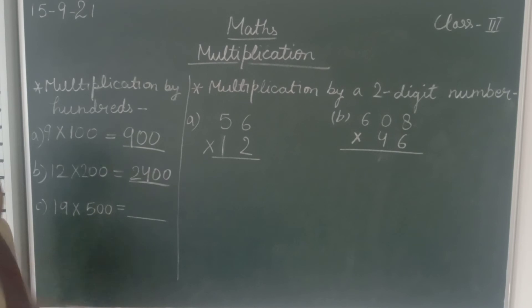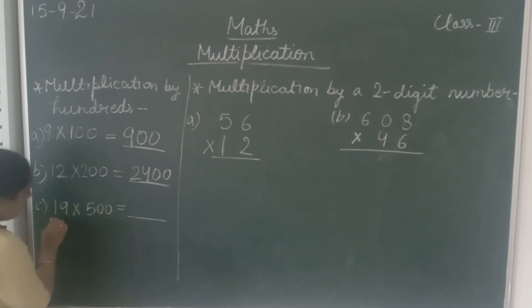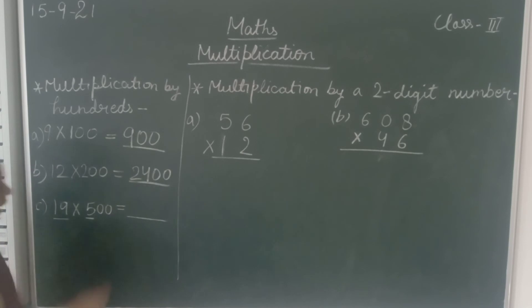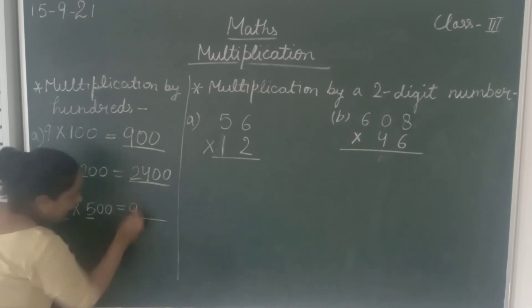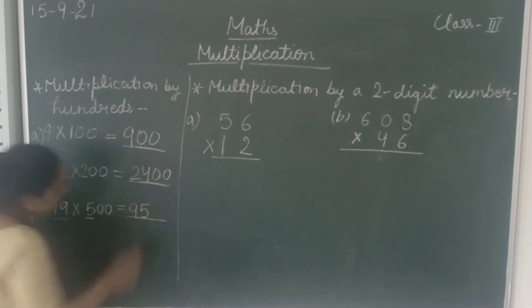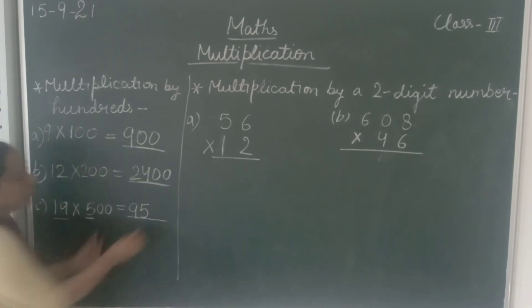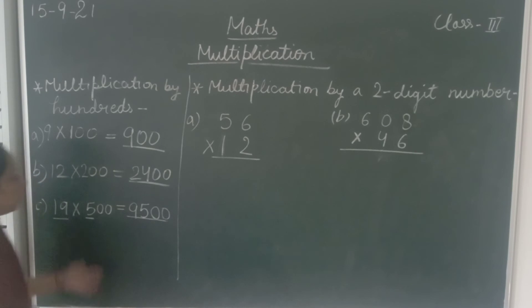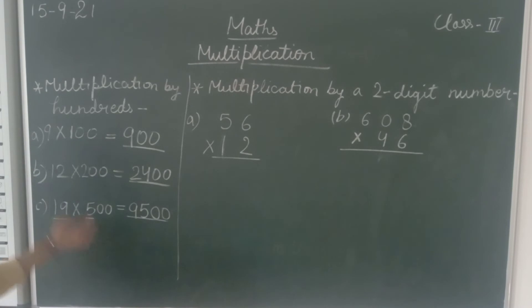Now this one: 19 × 500. Again, we are just going to multiply 19 and 5. So 19 fives are 95, and then the two zeros will come in the product, giving us 9500.